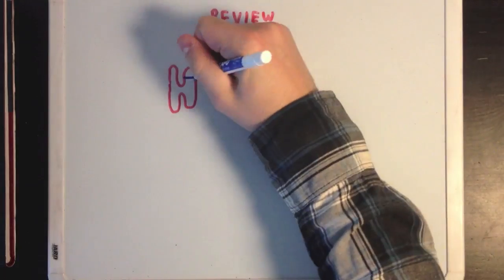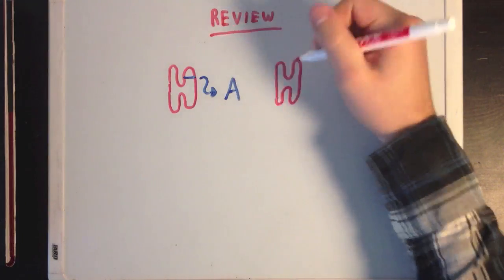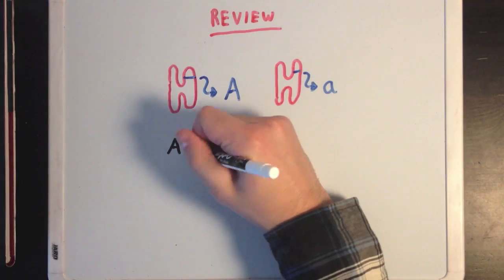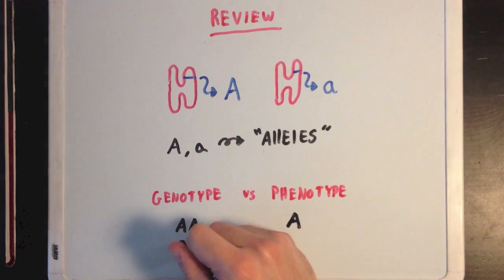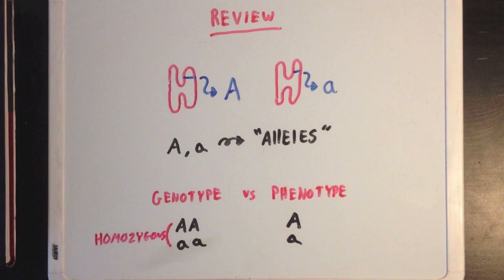Recall that human cells have two alleles for every gene, which are often marked by either capital letters or lowercase letters. Also remember the difference between a cell's genotype and phenotype. The genotype refers to the genetic makeup of a cell, whereas the phenotype refers to the trait that is ultimately expressed by the genes.